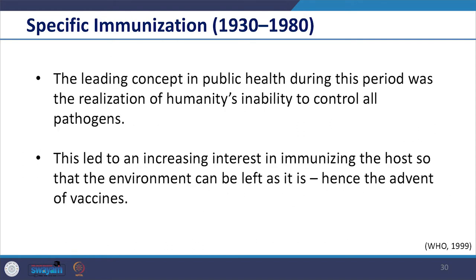The third period is specific immunization, which spread from 1930 to 1980. During this period, we realized that humanity was incapable of controlling all pathogens. This led to an increasing interest in immunizing the host — that is, us — so that the environment could be left as it is, hence the advent of vaccines. We spent a lot of time and money developing vaccines to improve the health capacity of our body. This led to a major shift from sanitation to immunization, and the pendulum shifted from a social model to a medical model.